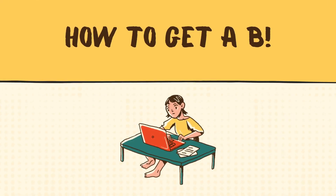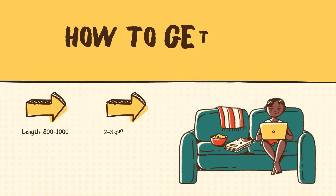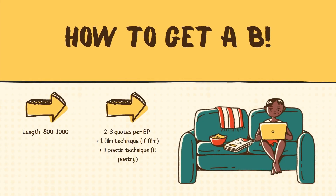Next up, if you're trying to go from C's to B's. Firstly, make sure your essay is full length, 800 to 1000 words. If you want a B, you have to be hitting the word count. Secondly, analyze at least two quotes per body paragraph and ideally three. If you're doing a film, analyze at least one film technique per body paragraph. These rules aren't hard and fast in the sense that you'll be graded against them in a rubric. However, B essays include a solid amount of evidence, so these are a good metric to aim for.